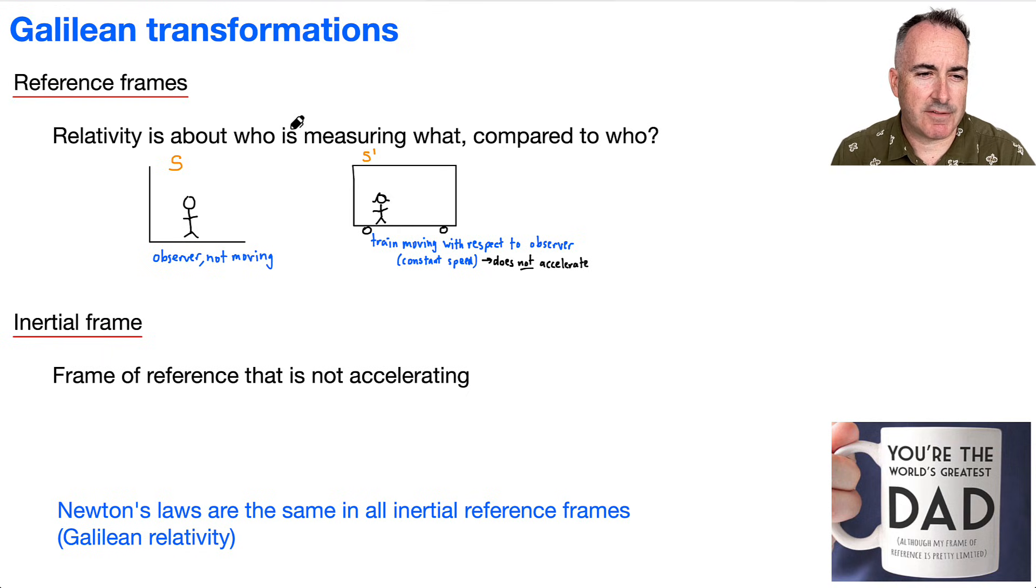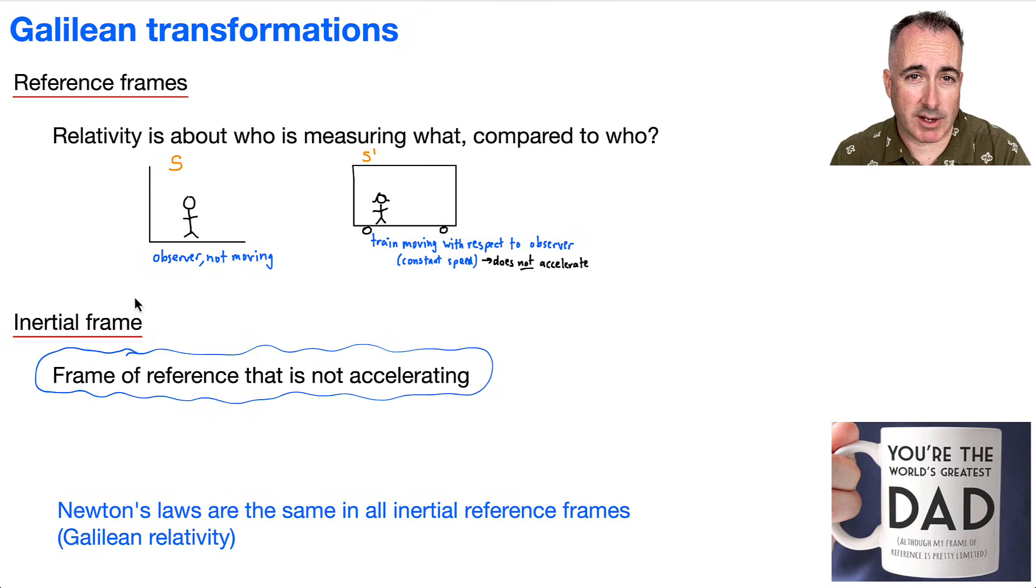So now what's the definition of an inertial frame? This is going to be so important. So an inertial frame is a reference frame that's not accelerating. If it's not accelerating, that means it might have two things: either it's not moving at all, or it's moving at a constant speed. And we're going to assume that Newton's laws are the same in all inertial reference frames. In other words, we call this Galilean relativity.